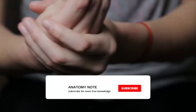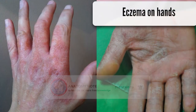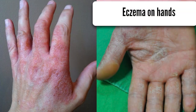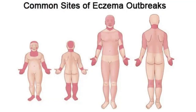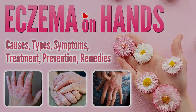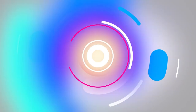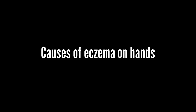Eczema on hands is a common acute or chronic eczematous disorder that affects the dorsal and palmar aspects of the hands due to a variety of causes. Also called hand dermatitis, hand eczema is one of the most common types of eczema. In this video, we will introduce useful information about eczema on hands: causes, types, symptoms, treatment, prevention, and natural remedies. Welcome to the Anatomy Note YouTube channel.